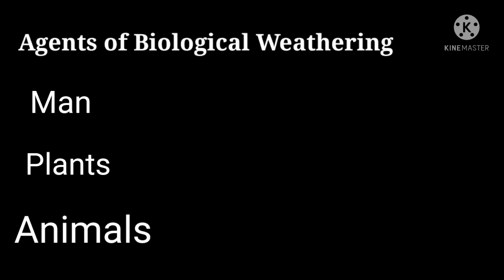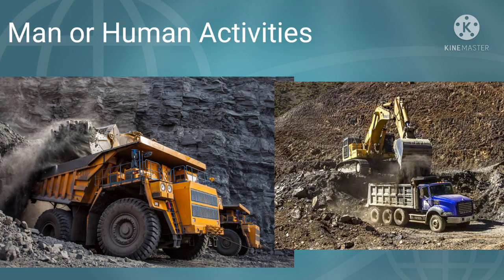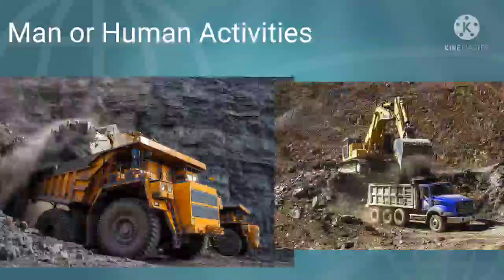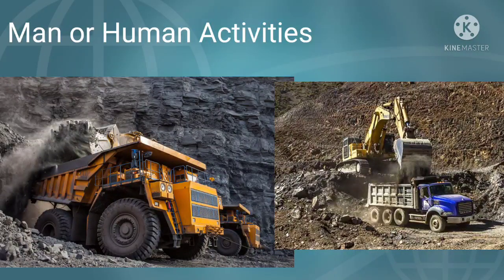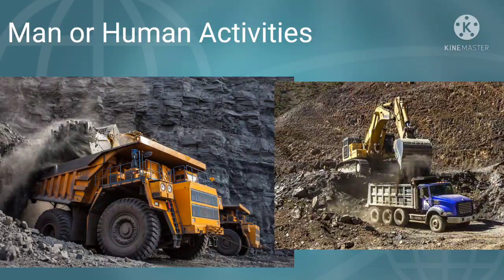Starting with man or human activities: man converts physical landscape into cultural or man-made landscape by building houses, roads, dams, bridges, and forts. The physical landscape is totally changed due to mining or industrial activities. Agriculture also involves leveling of land or construction of canals. All these activities of human beings directly or indirectly relate to the weathering of rocks.